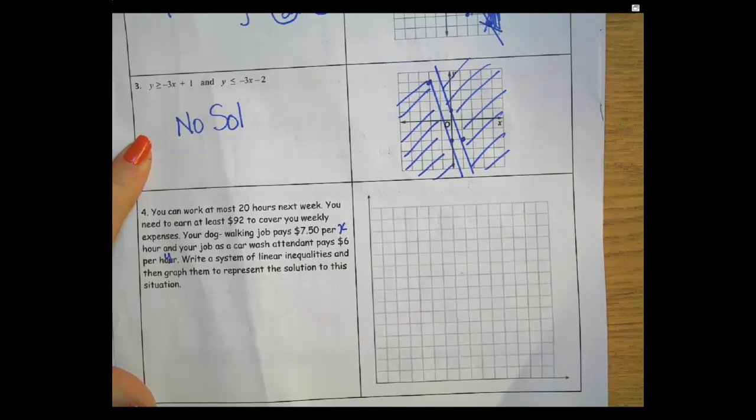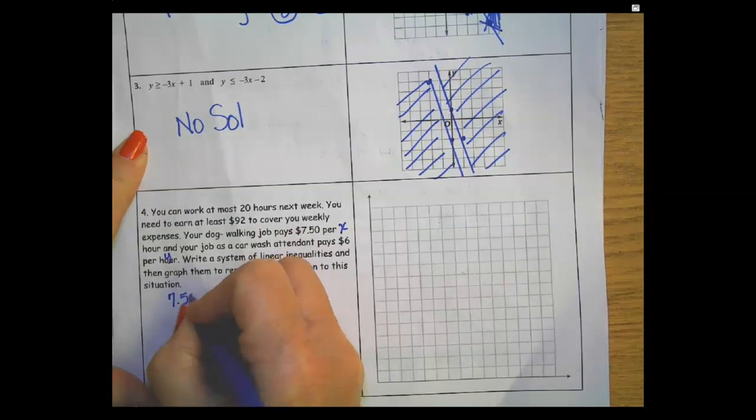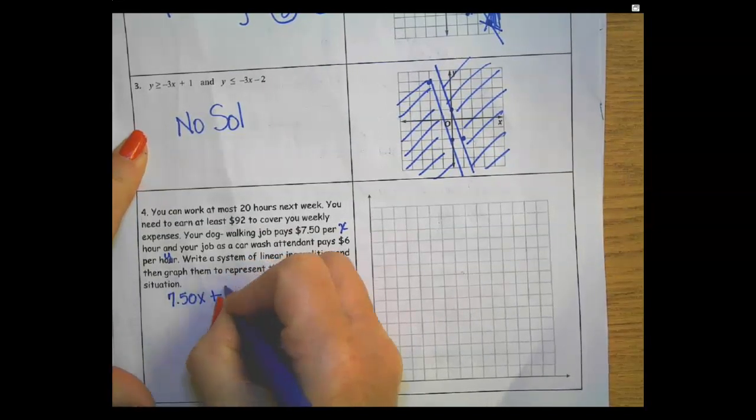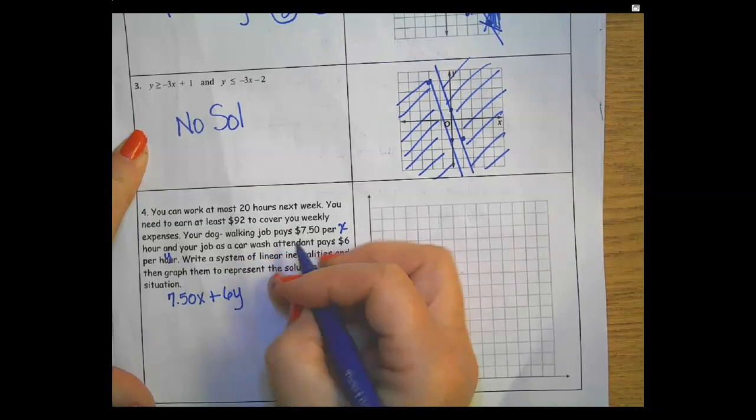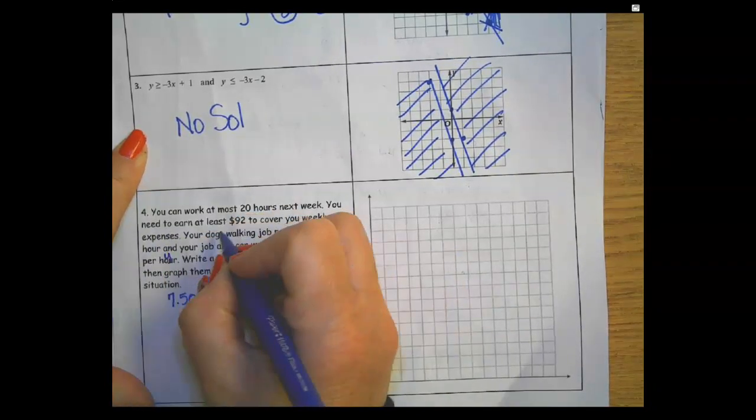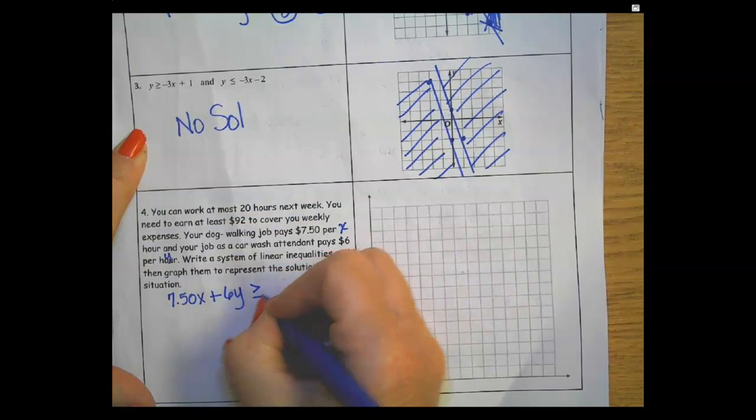I know it's $7.50x plus $6y must earn at least, so that's greater than or equal to 92.